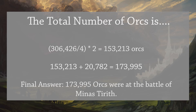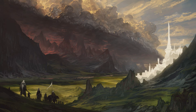All we need to do now is add the number of orcs from the first section and multiply by two to get the total. In the first section, on just one side, there are 10,981 orcs, so we multiply that by two and add the 153,213 orcs, giving us 173,995 orcs. Effectively, 174,000 orcs are at the Battle of Minas Tirith as Peter Jackson depicted it in Return of the King — against just 543 Gondorian soldiers. That is some very long odds for those poor soldiers of Gondor.